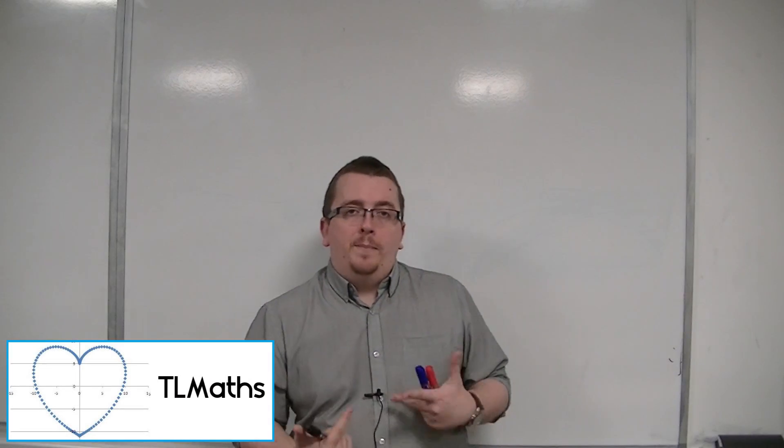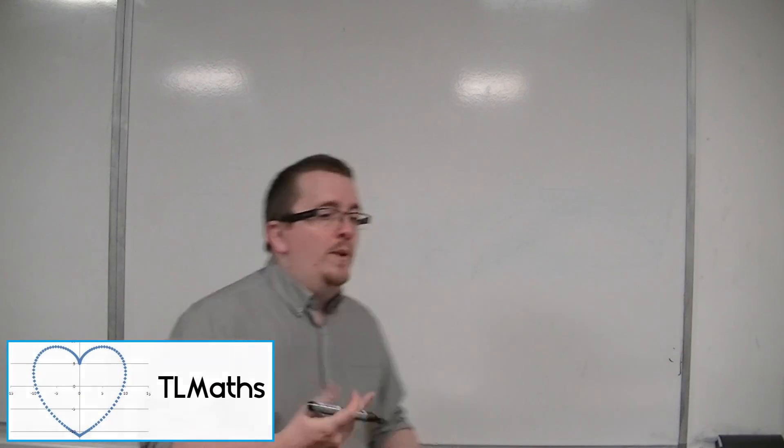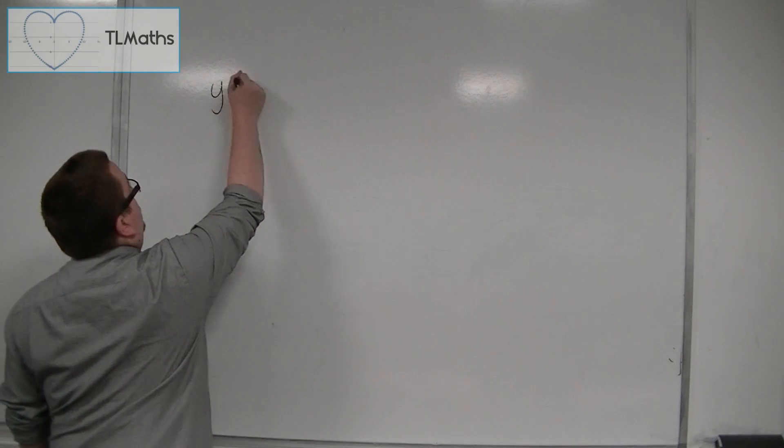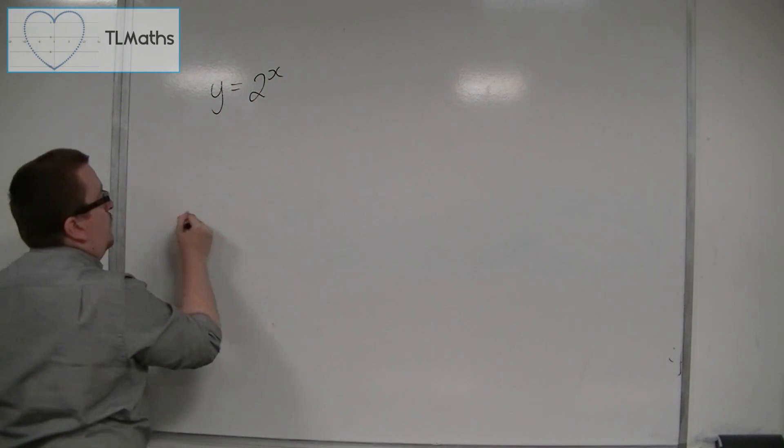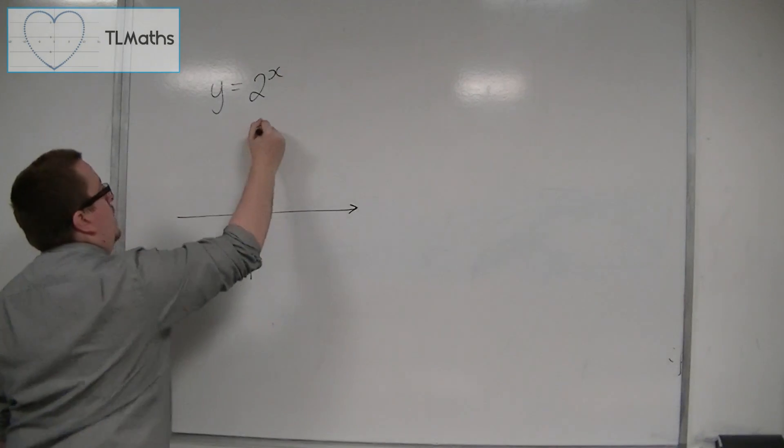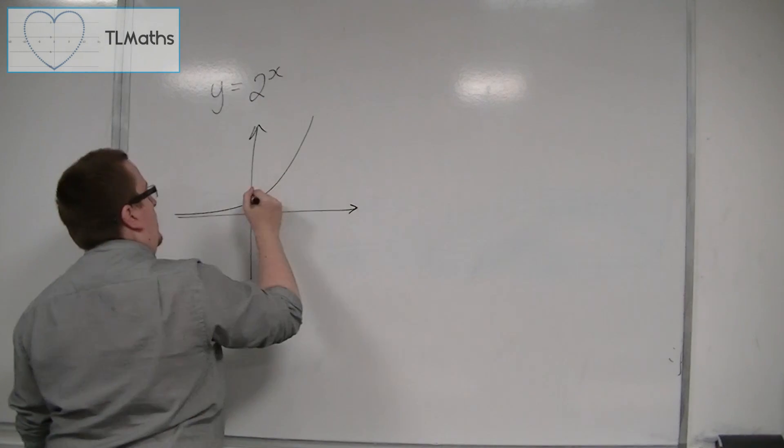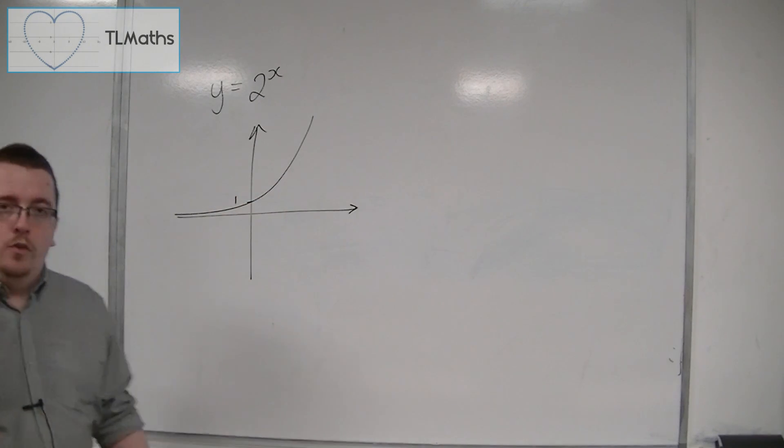So we now know what an exponential curve looks like. We have something like y is equal to 2 to the x, and we now know that we can sketch it, where the curve looks something like this, going through 1 on the y-axis.